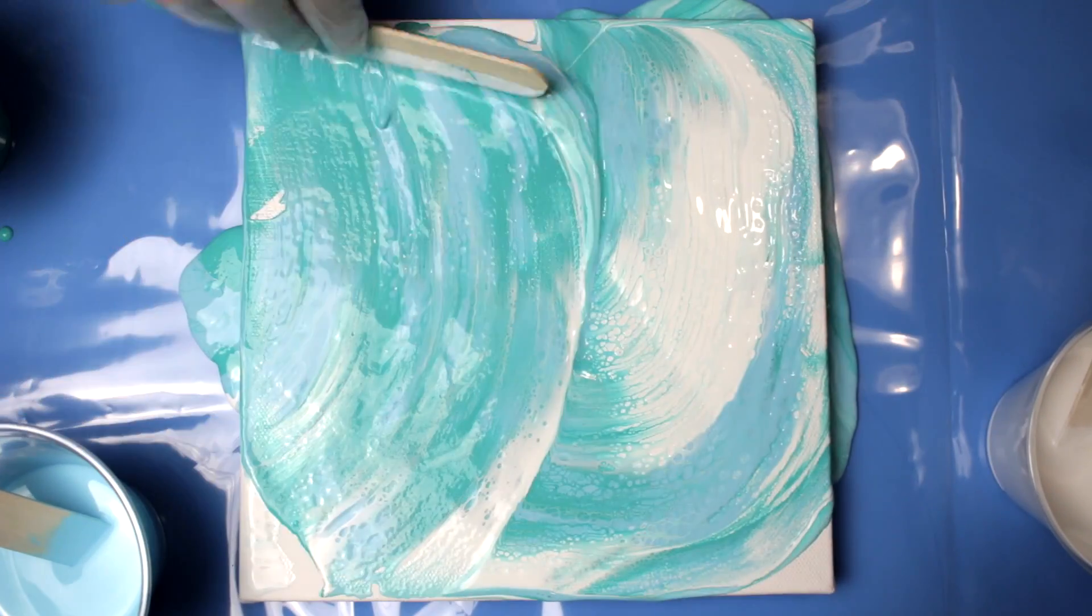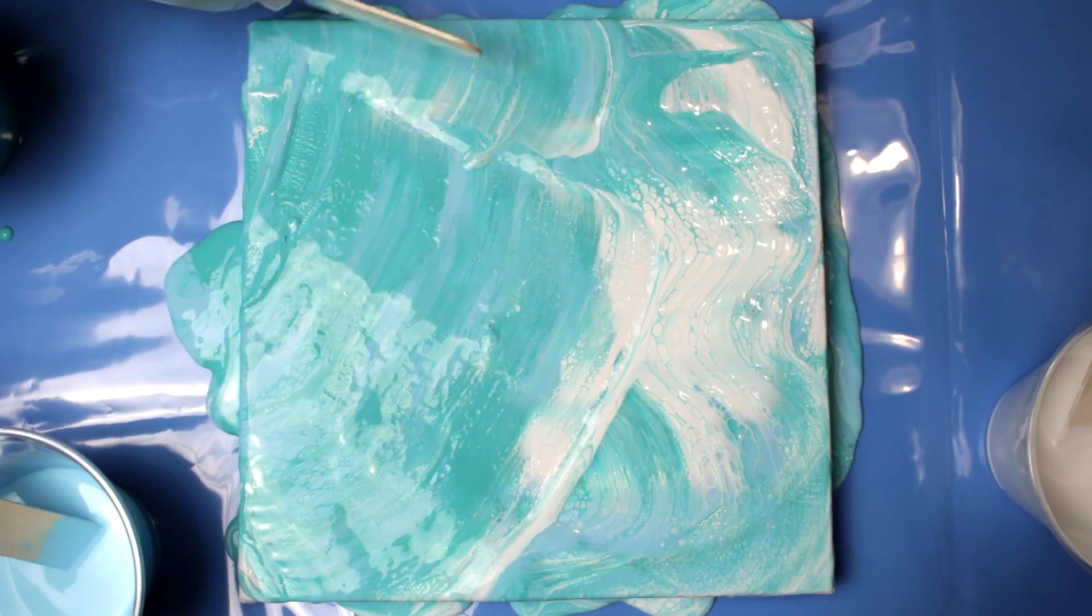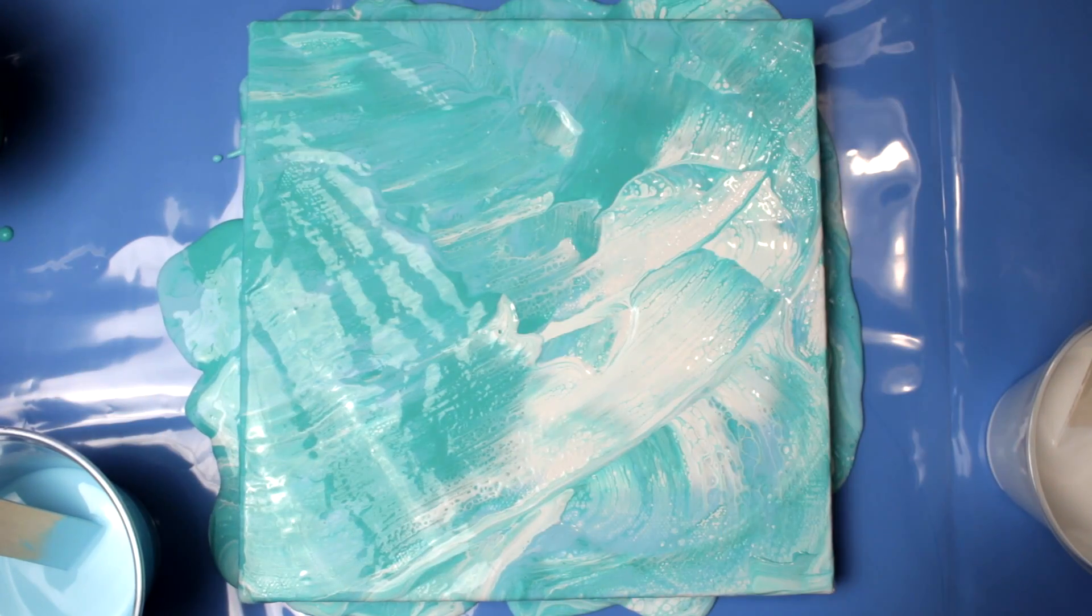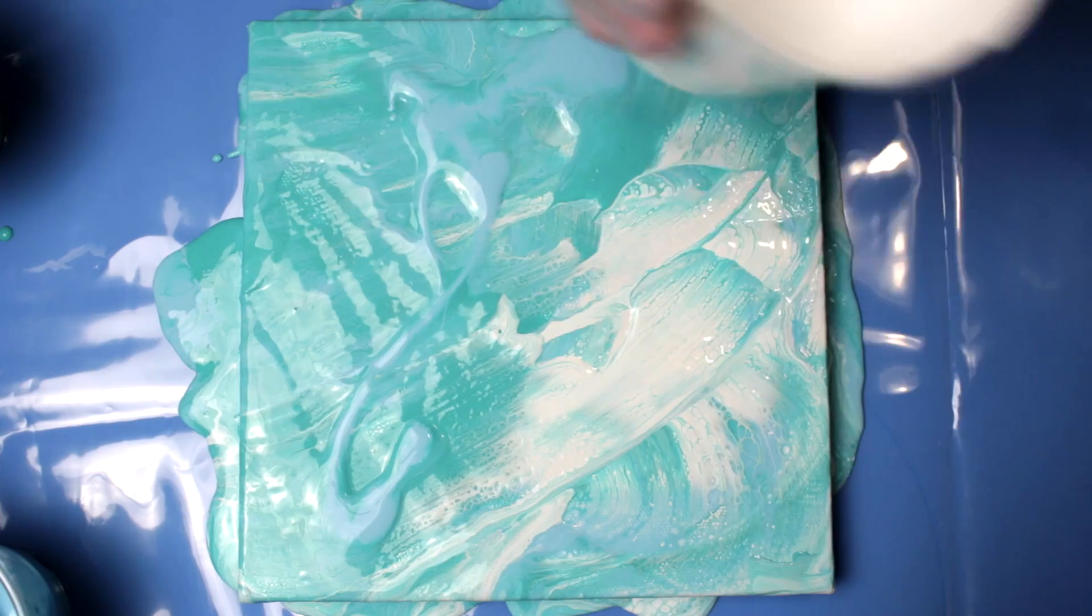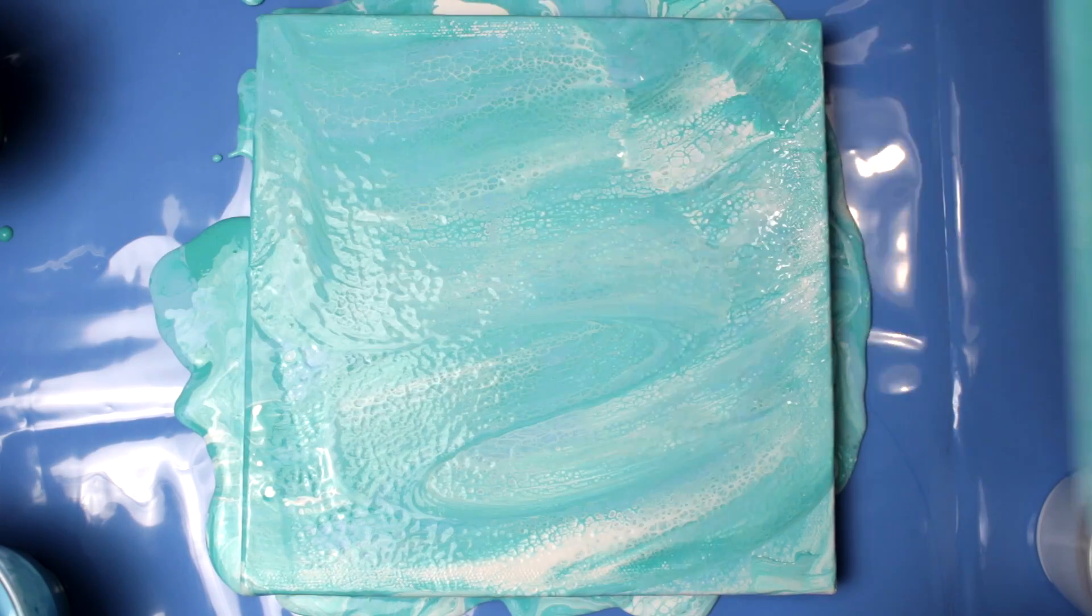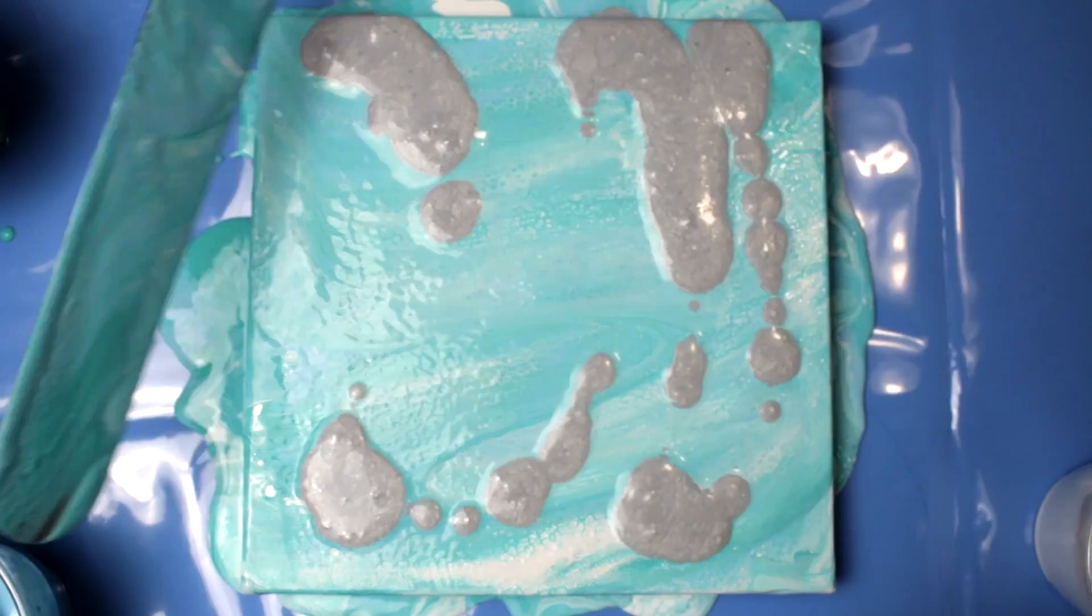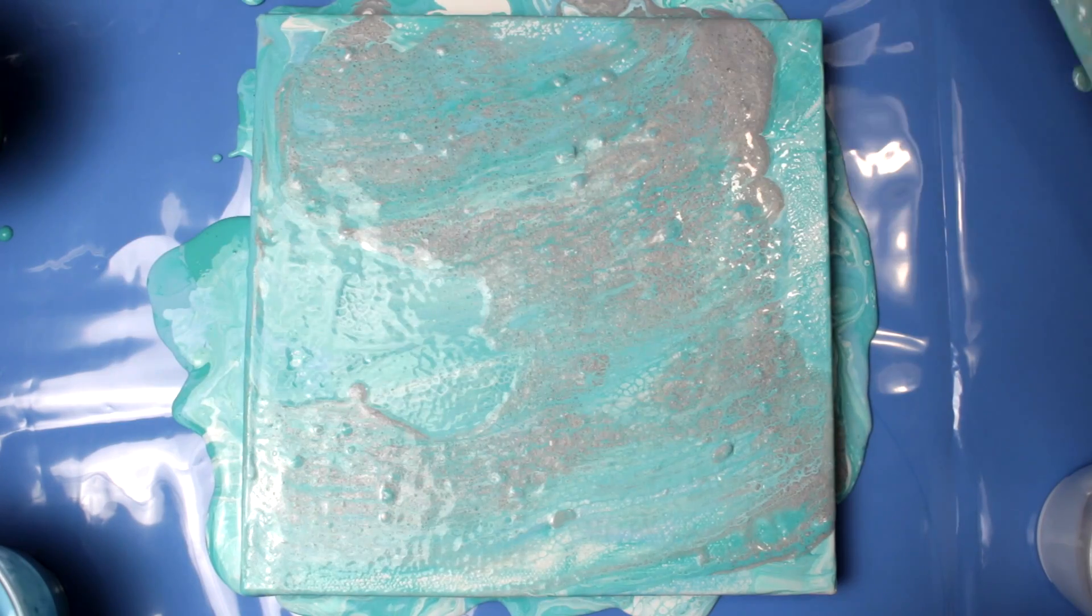I put it on my canvas and I'm starting to blend it out with my popsicle stick. I'm putting some more in there and using a spatula to get it going, and using a heat gun to create cells in my painting.